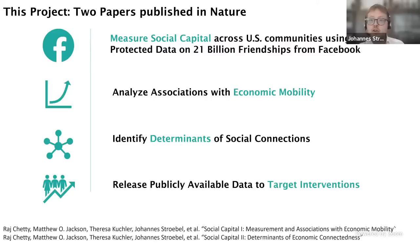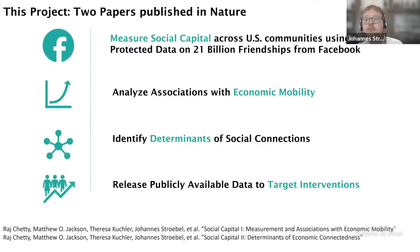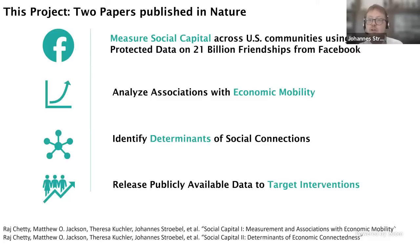First, we measure these three distinct concepts of social capital across communities using privacy-protected data on 21 billion Facebook friendship links. Second, we try to understand the associations of these social capital measures with economic mobility. Third, we focus on a new measure we develop called economic connectedness — the extent to which high and low income individuals within a community are connected with each other. Fourth, we release a publicly available dataset on all these social capital measures for every zip code, high school, and college within the United States.